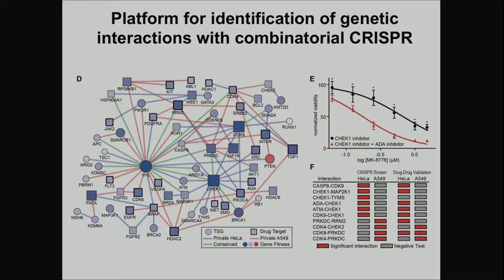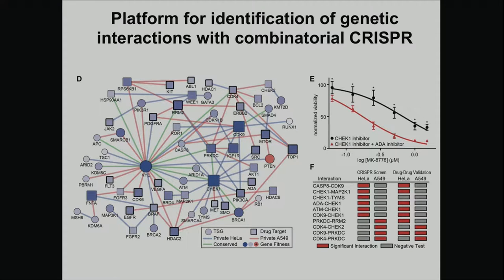We're comparing two human cancer cell lines: HeLa cells and A549s. The remarkable finding so far is that these two networks look very different — the pairs of gene perturbations that result in cell death for one cell line are about 70% different from those for the other. The conserved interactions are shown in green. Anything not green is private either to HeLa — shown in blue — or private to A549 cells.